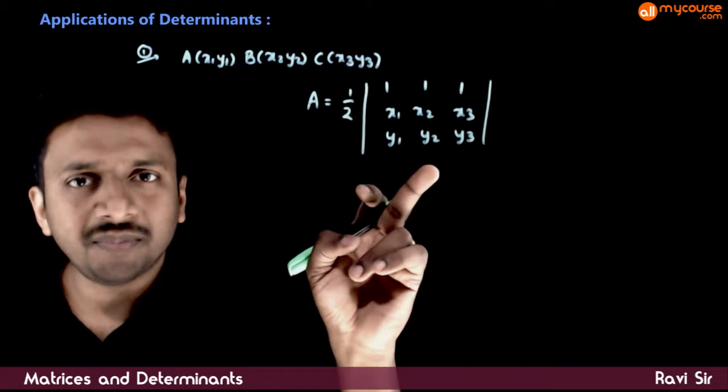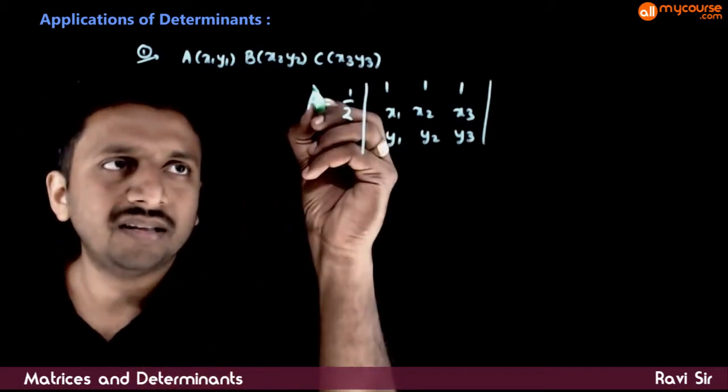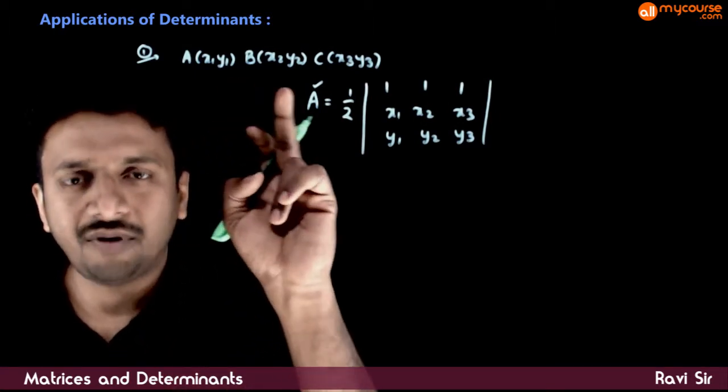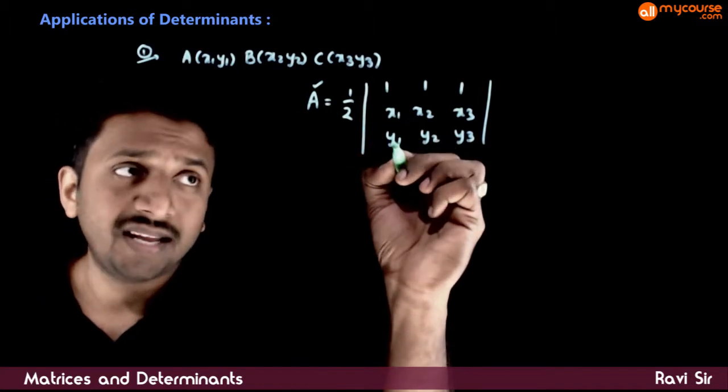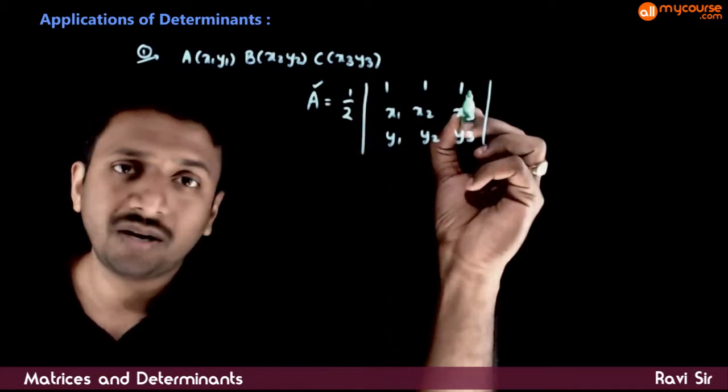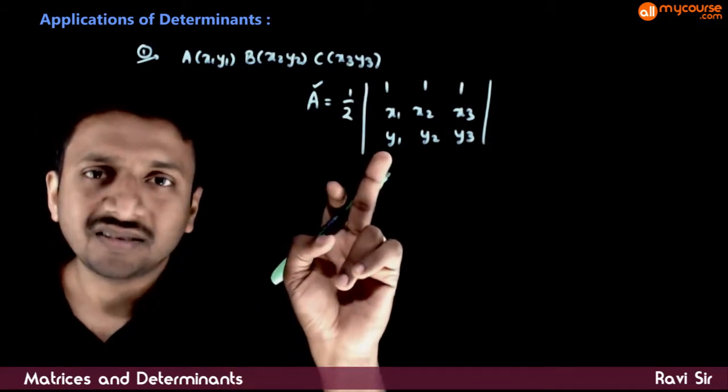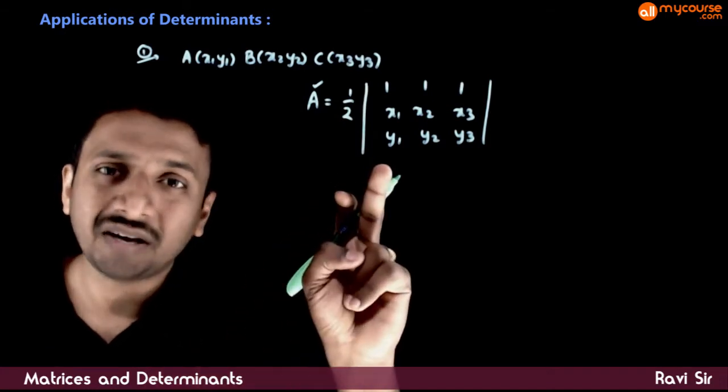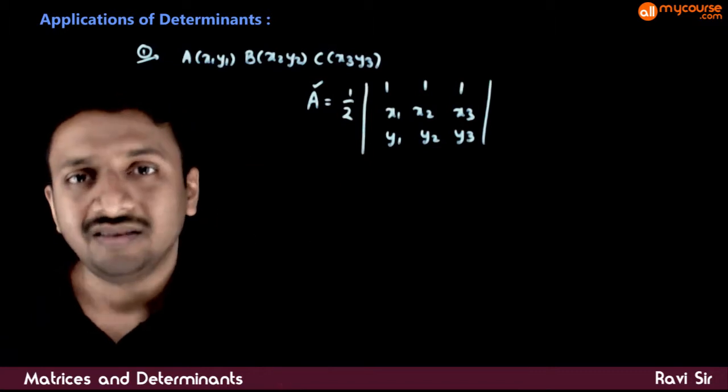If you find this determinant and multiply it with half, you get the numerical value of the area of the triangle. The first row is 1 for the first point, 1 for the second point, 1 for the third point. This is the formula for the area of the triangle formed by these three points.